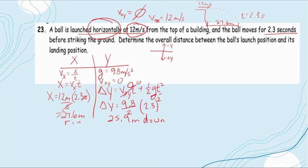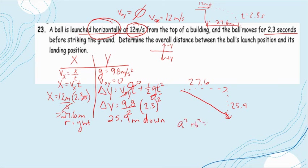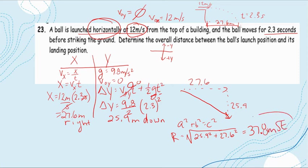So I have 27.6 meters to the right and 25.9 meters down. The resultant is directed southeast. Using a² + b² = c², the resultant equals the square root of 25.9² plus 27.6², which gives a value of 37.8 meters southeast.